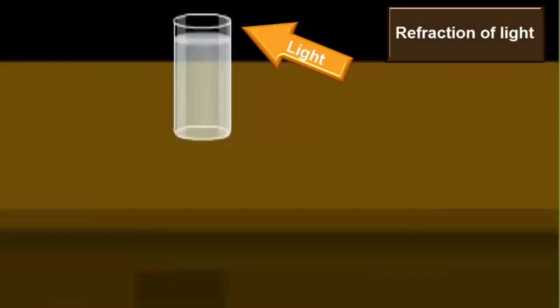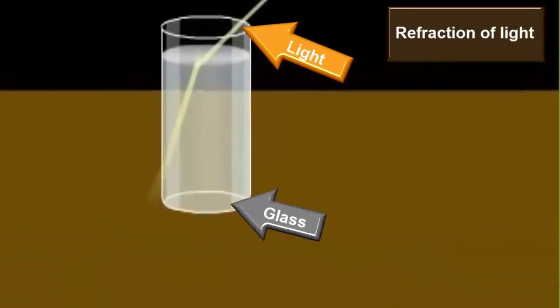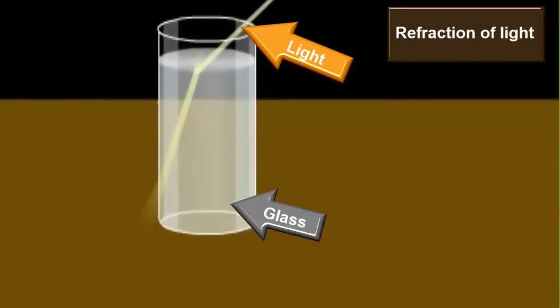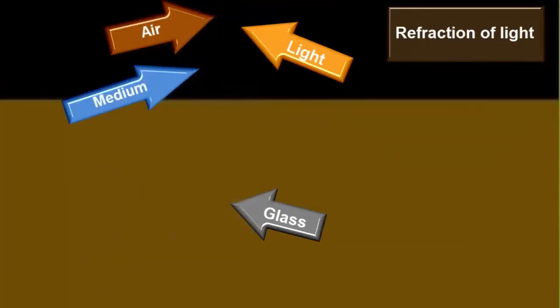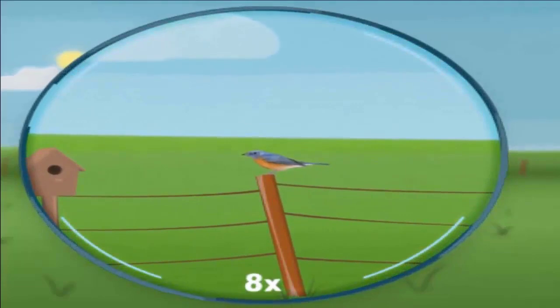Lenses: When light enters from a rare medium like air to a denser medium like glass, it bends toward the normal. When it moves from denser to rare medium, it bends away from the normal. The major use of refraction is the formation of images by lenses.